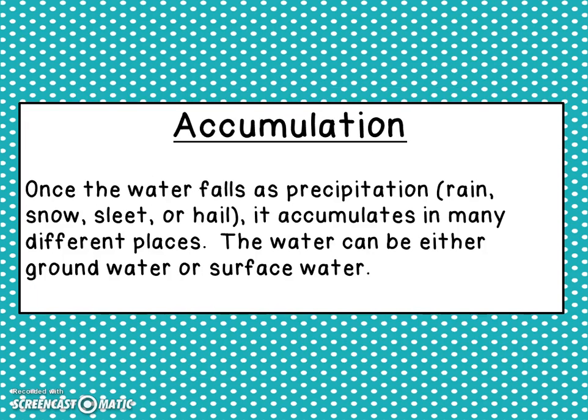The last part of the water cycle is called accumulation. Once the water falls as precipitation — rain, snow, sleet, or hail — it starts to accumulate in many different places. The water can either be groundwater or it can be surface water.